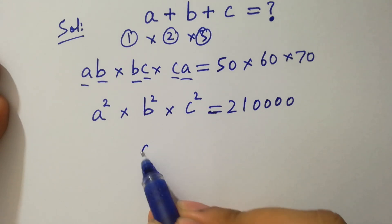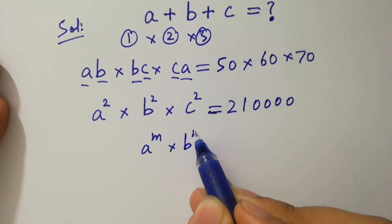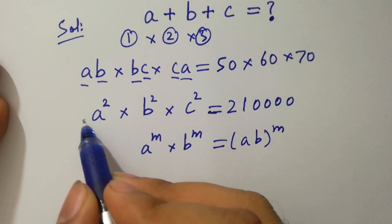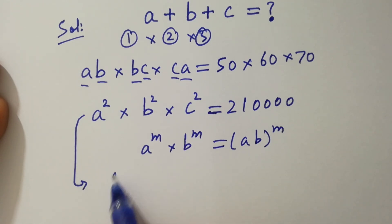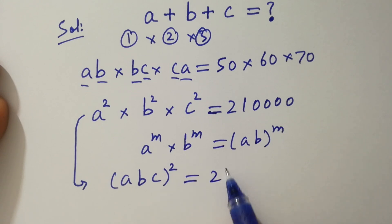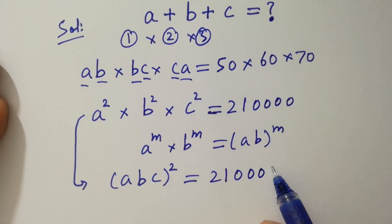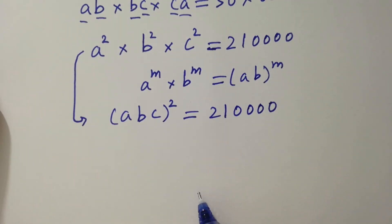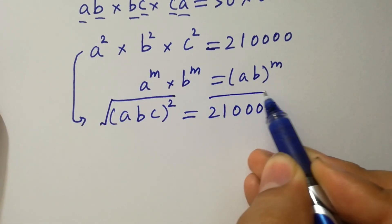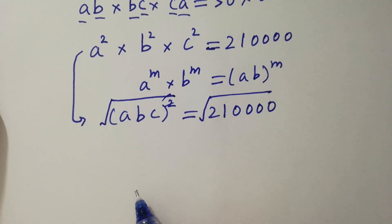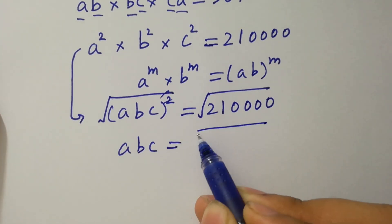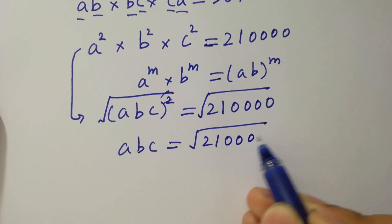Since a to the power m times b to the power m equals ab to the whole power m, it will be (abc) all squared equals 210,000. To simplify this, take the square root on both sides. The square cancels from the square root, giving abc equals the square root of 210,000.